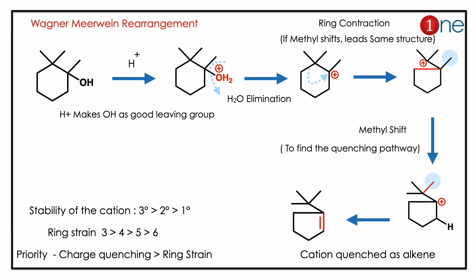The stable tertiary cation forms, then again a methyl shift happens, giving you a tertiary cation. Finally, you have alkene formation. The formation of the second methyl group is due to charge quenching. The alkene formation is the only pathway.